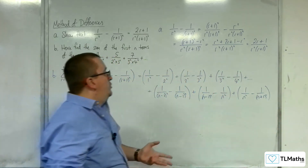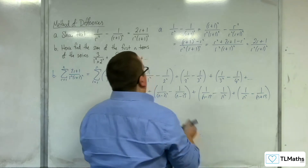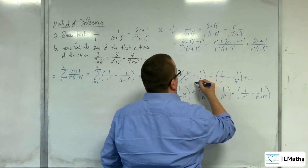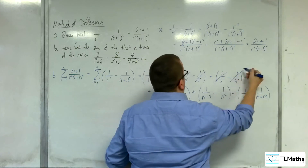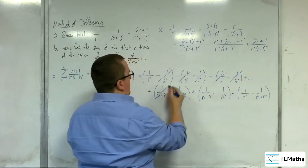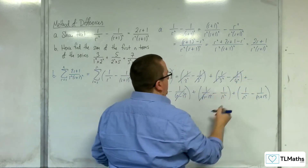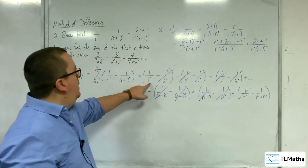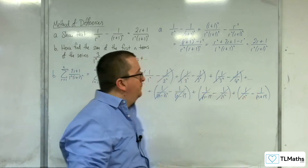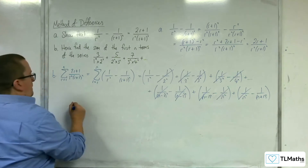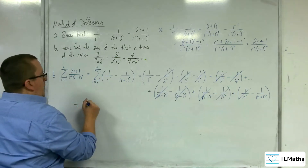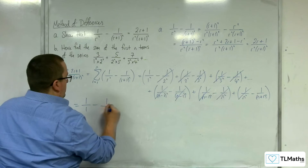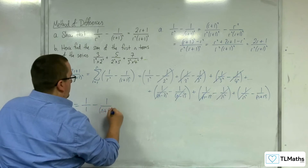This is where the cancellations come in. We can see cancellations throughout: the 1 over 2 squared terms cancel, the 1 over 3 squared terms cancel, the 1 over n minus 1 squared terms cancel, and the 1 over n squared terms cancel. We're just left with the first term and the last term, giving us 1 over 1 squared take away 1 over n plus 1 squared.